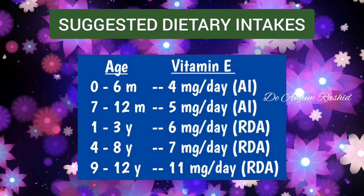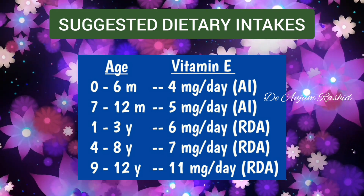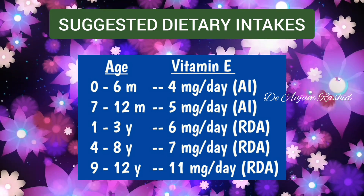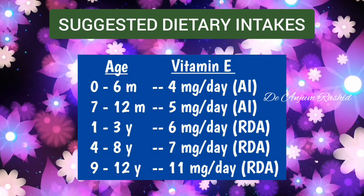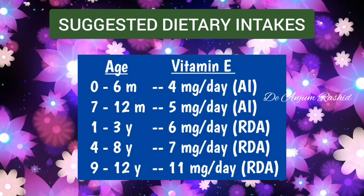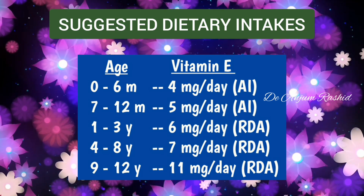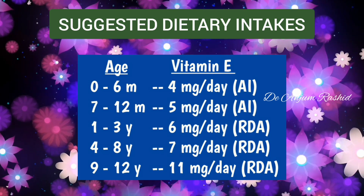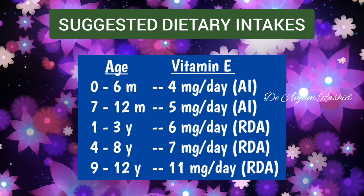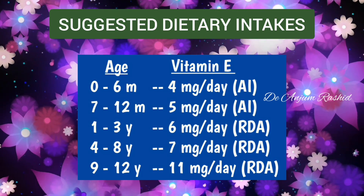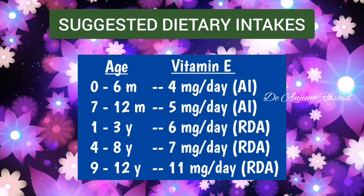These are the suggested dietary intakes of Vitamin E for children of different ages. For 0 to 6 months, adequate intake is 4 milligrams per day; for 7 to 12 months, adequate intake is 5 milligrams per day. The recommended dietary allowance for children 1 to 3 years is 6 milligrams per day; for 4 to 8 years it is 7 milligrams per day; and for 9 to 13 years it is 11 milligrams per day.